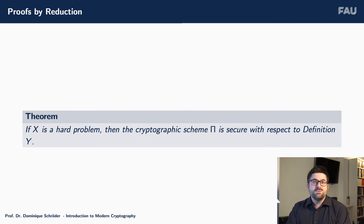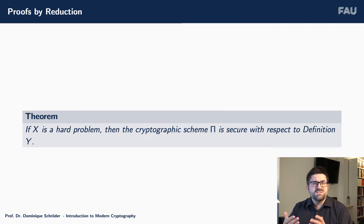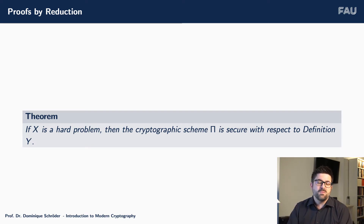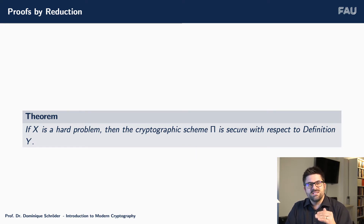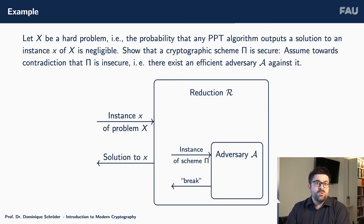As you can see here, this is the formal theorem — an abstract notion of the theorem — that essentially says: if the problem is difficult, then the construction is secure. Now if we create the contradiction, we say the scheme is insecure, and therefore we are given this adversary. Where is this adversary coming from? We are receiving it for free. Once we assume that the protocol or cryptographic primitive is insecure, then by definition we are guaranteed that we have an efficient algorithm that breaks the security as we defined it.